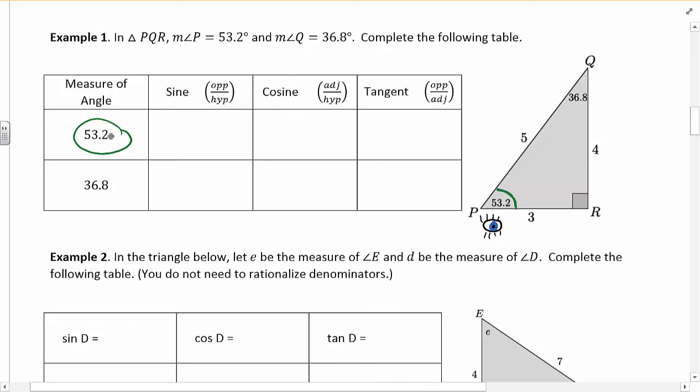sine is the ratio of 53.2's opposite side with the hypotenuse. So from this perspective, the opposite is the 4, and the hypotenuse is whatever's across from the right angle, which in this case is 5. So the sine of 53.2 is 4 fifths.